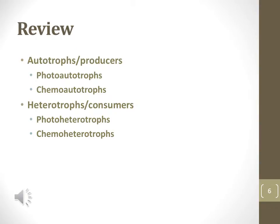This slide reviews the different classifications of organisms based on their methods of energy production. Recall that autotrophs store their own energy using only inorganic compounds, whether the energy source is from light energy or chemical energy from inorganic chemicals. Autotrophs are known as producers. Heterotrophs must use organic compounds to store their energy, whether the source of energy is sunlight or organic chemicals. Heterotrophs are consumers.